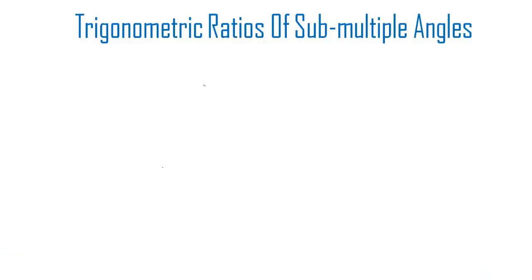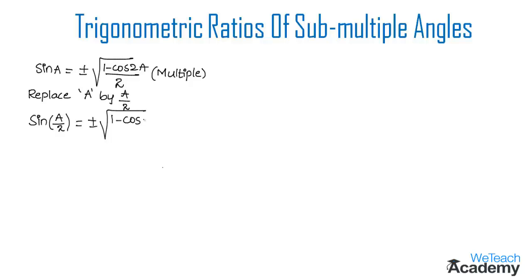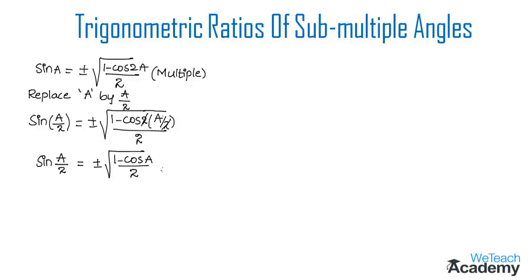To discuss the formulas for sub-multiple angles, let us consider the formula: sine(a) = ±√((1 − cos 2a) / 2), where 2a is the multiple angle. To get the sub-multiple angle formula, we replace a with a/2. This gives sine(a/2) = ±√((1 − cos 2·(a/2)) / 2). The 2s cancel, yielding sine(a/2) = ±√((1 − cos a) / 2). This is equation 1.